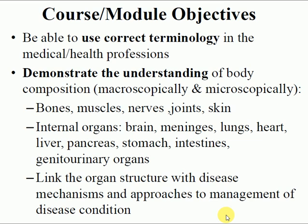The module objectives are: first, a student should be able to correctly use terminologies in the medical or health professions. The second module objective is to demonstrate understanding of the body composition macroscopically and microscopically. Students should understand the composition of bones, muscles, nerves, joints, and skin — how they are arranged and what cells make them, and how those cells can be affected by different chemicals or medications.